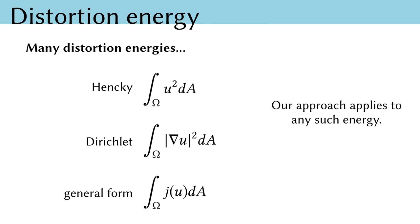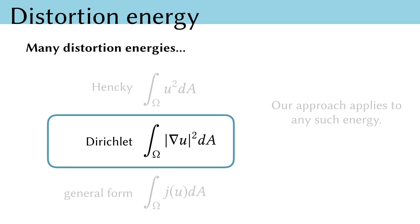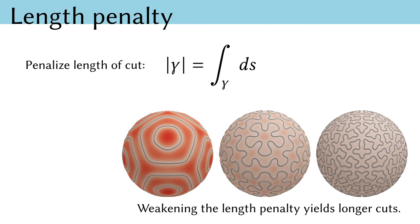Now that we have easy access to the distortion induced by any cut, we can choose an energy to penalize that distortion. To name a few, the Hencky energy corresponds to a strain energy for thin plate material stress, Dirichlet energy measures how non-constant the distortion is, or more generally we can consider any form J of U. Our approach applies generally to any of these kinds of energies. For the rest of this talk, I'll focus on the Dirichlet energy simply because it has the most concise notation. Similarly, our desire for short cuts is easily captured by penalizing the length of the cut curve itself. On the right, I've shown some results of our method, where weakening the length penalty yields longer cuts with less distortion.